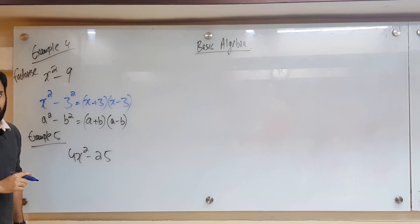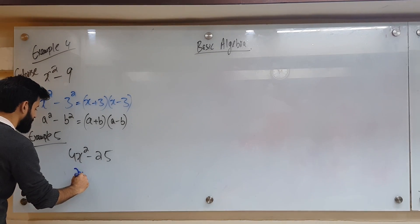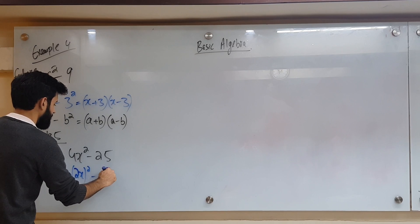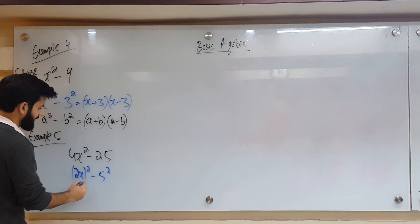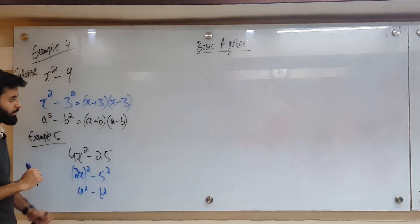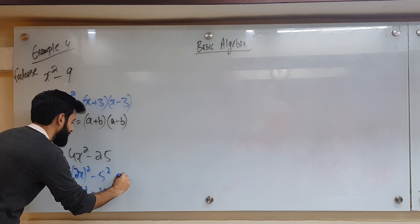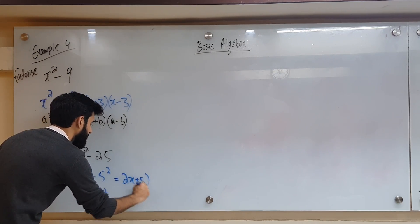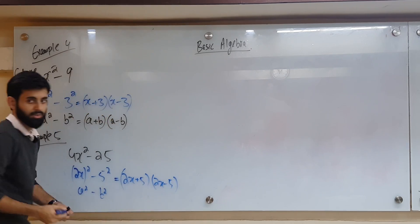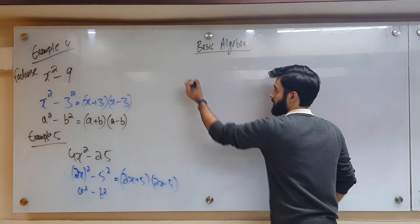Yes! Which square is 4x squared? Can I write this as 2x whole squared? Yes. And can I write 25 as 5 squared? Yes, of course. So is this like a squared minus b squared? Yes — and a squared minus b squared equals a plus b times a minus b.